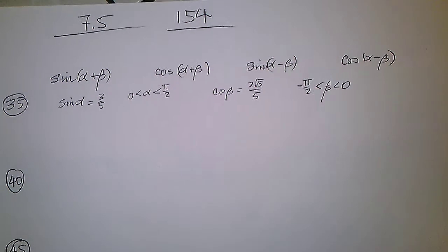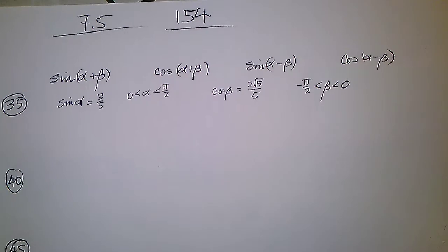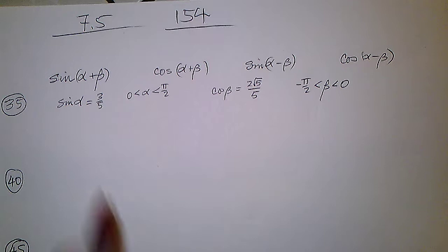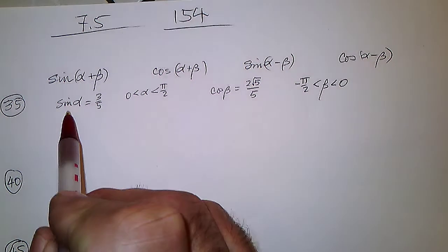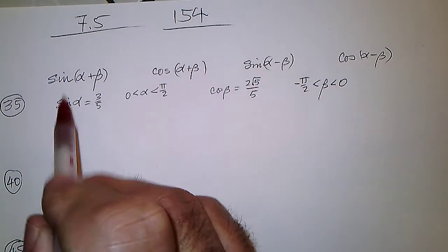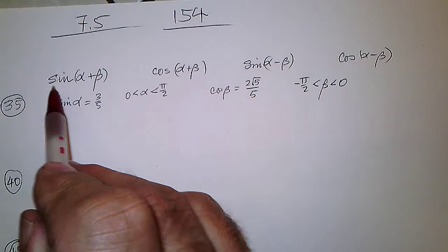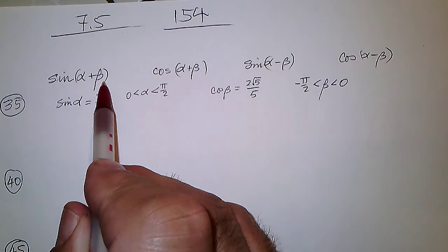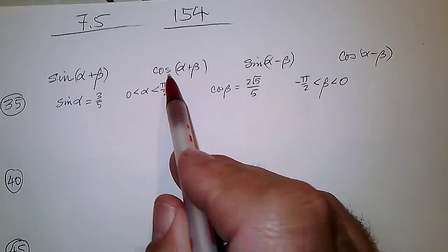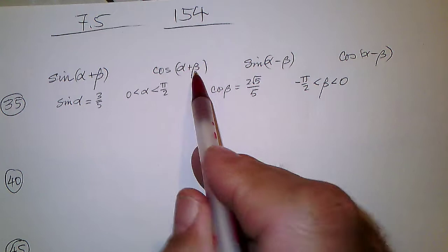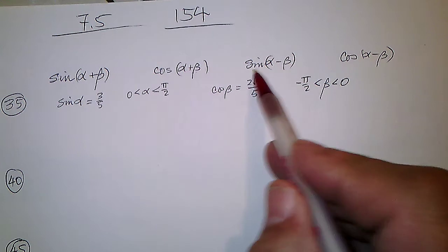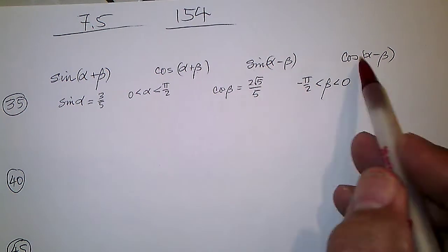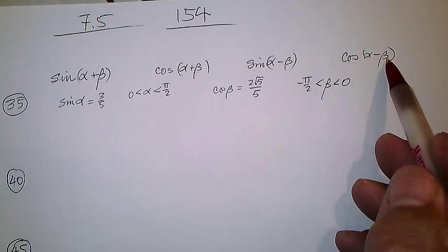Problem 5 on 7, number 5. We're supposed to find the sine of alpha plus beta, cosine of alpha plus beta, sine of alpha minus beta, and cosine of alpha minus beta.